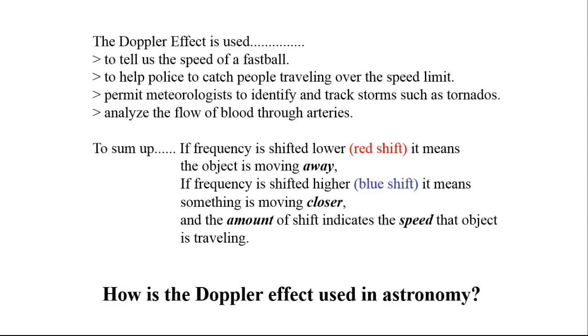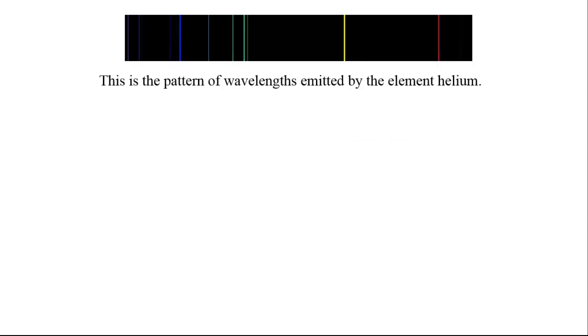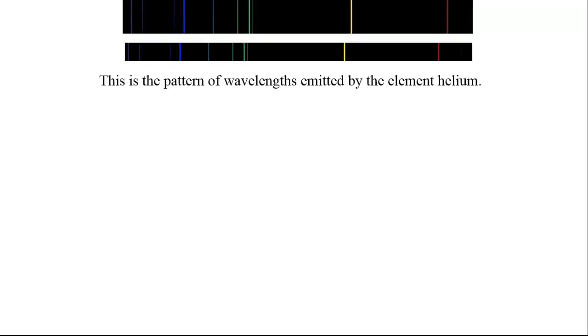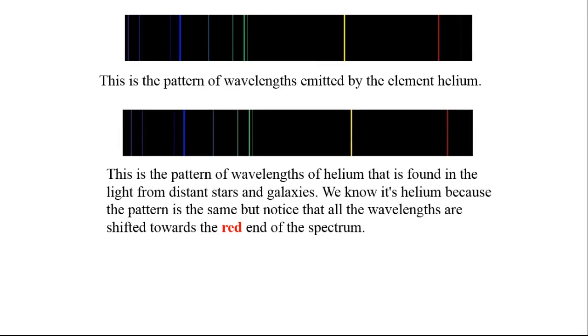How is the Doppler Effect used in astronomy? This is the pattern of wavelengths emitted by the element helium. This is the pattern of wavelengths of helium that is found in the light from distant stars and galaxies. We know it's helium because the pattern is the same, but notice that all the wavelengths are shifted toward the red end of the spectrum.